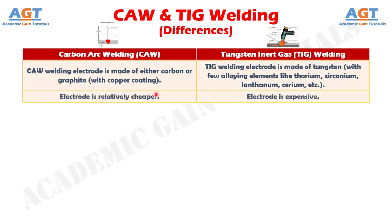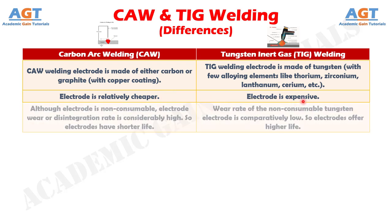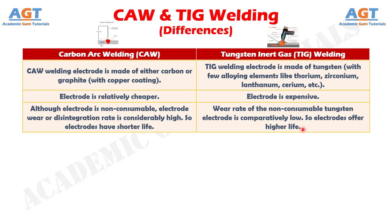Number 2: In carbon arc welding, the electrode is relatively cheaper, whereas in TIG welding, the electrode is expensive. Number 3: In carbon arc welding, although the electrode is non-consumable, electrode wear or disintegration rate is considerably high, so electrodes have shorter life. Whereas the wear rate of the non-consumable tungsten electrode is comparatively low, so electrodes have longer life.